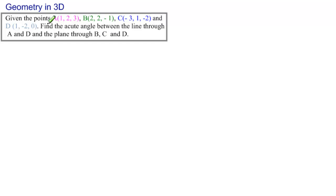The problem reads: Given the points A(1, 2, 3), B(2, 2, -1), C(-3, 1, -2), and D(1, -2, 0), find the acute angle between the line through A and D and the plane through B, C, and D.